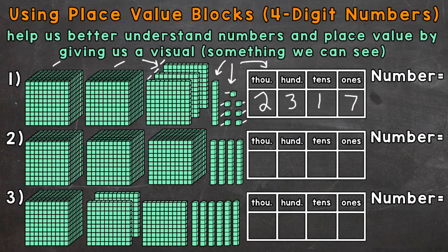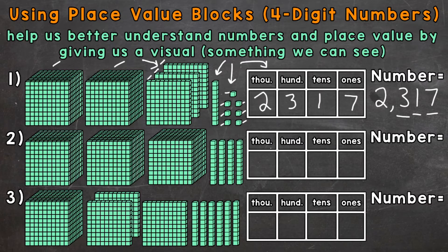So that number in standard form would be 2317. This seven represents seven ones — those seven individual blocks. This one right here represents one group of 10, which has a value of 10. The three represents three groups of 100, which has a value of 300. And then lastly, the two represents two groups of 1000, which has a value of 2000.